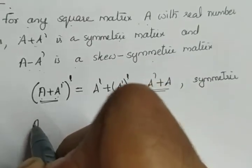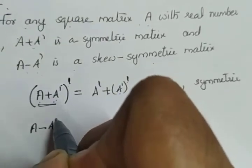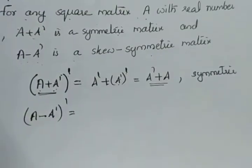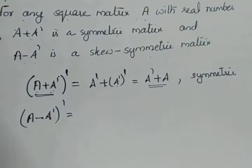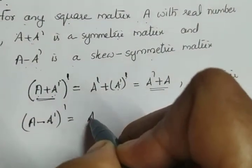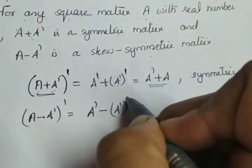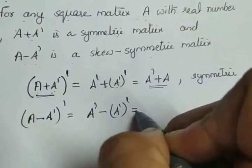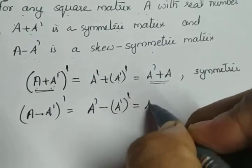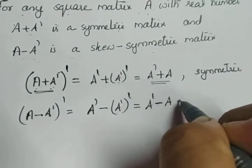Again, to prove the skew-symmetricity of A minus A transpose, take the transpose of (A minus A transpose). What we get is A transpose minus (A transpose) transpose. Applying the property that (A transpose) transpose equals A, we are getting A transpose minus A.